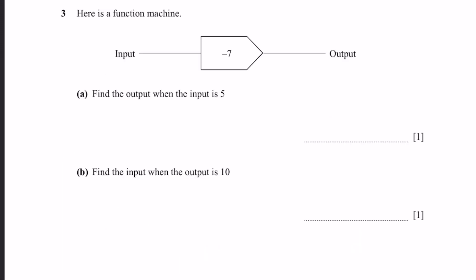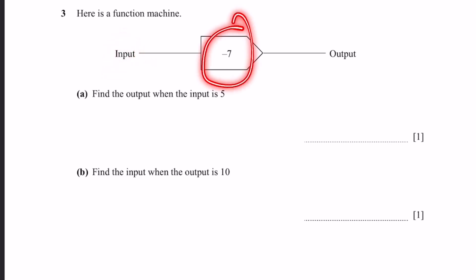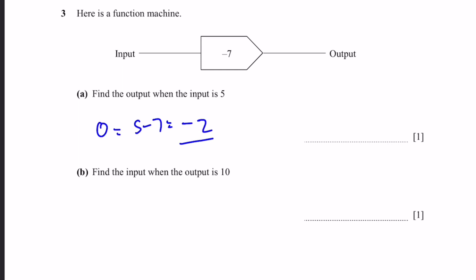Question 3, Part A. Here's the function machine. Find the output when the input is 5. When we apply minus 7, the output O is equal to 5 minus 7, which is negative 2.